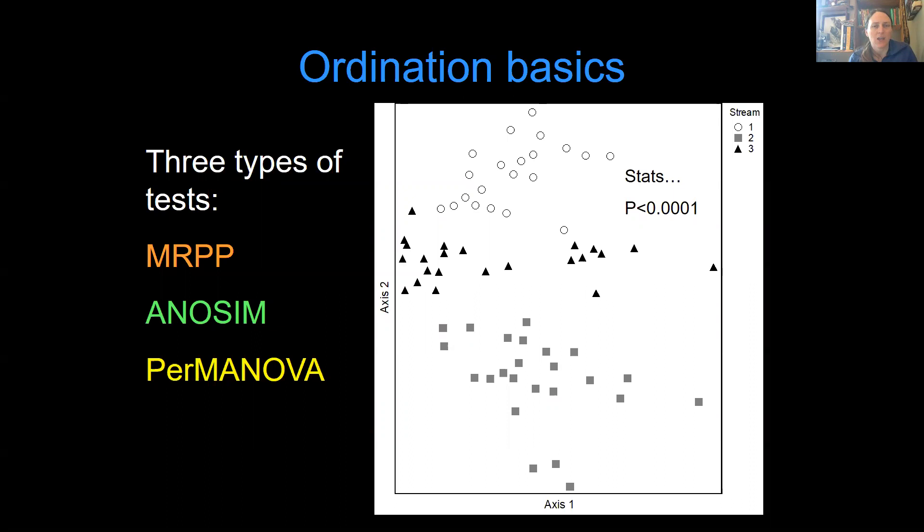All right, so we're going to talk about three different kinds of statistical tests that can go with an ordination. They are MRPP, ANOSIM, and PERMANOVA. You can see here, I'm just waiting for the stats to go along with this p-value.